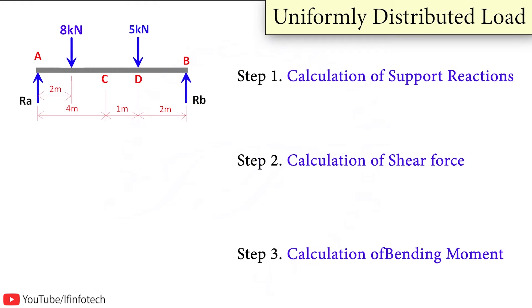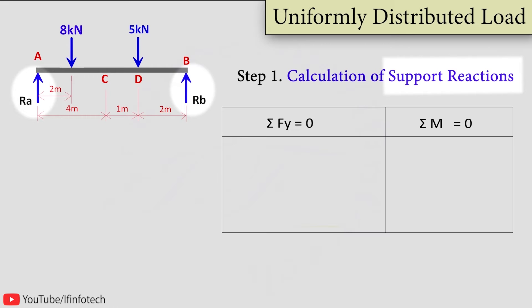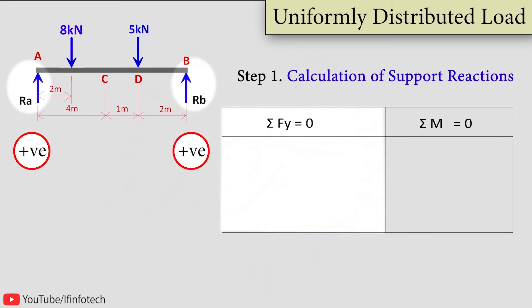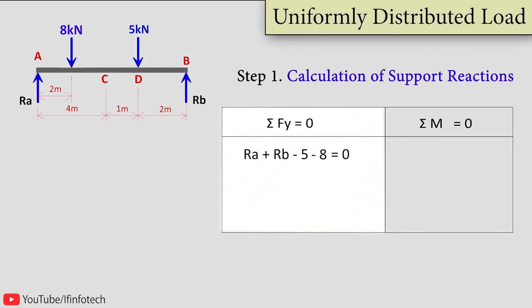This problem we are going to solve in 3 steps. The first step is to calculate values of support reaction. The first condition is summation Fy equals 0, where upward forces are treated as positive and downward forces are treated as negative. So I can write this as Ra plus Rb minus 5 minus 8 equals 0, therefore Ra plus Rb equals 13. I will give this as equation number 1.